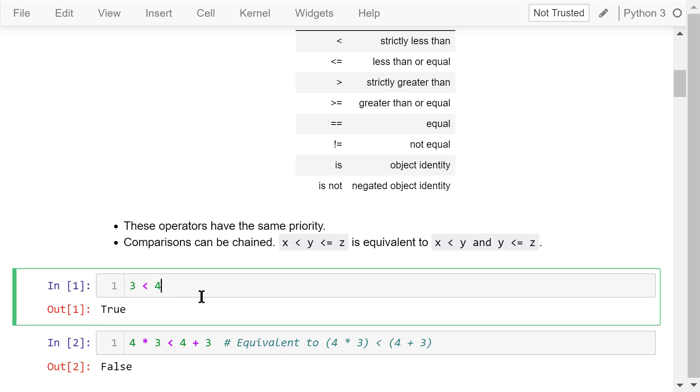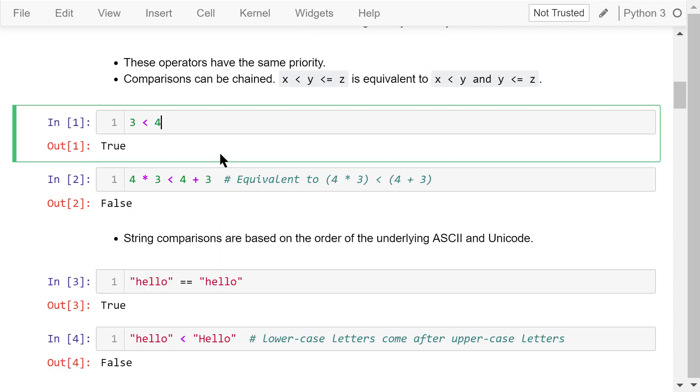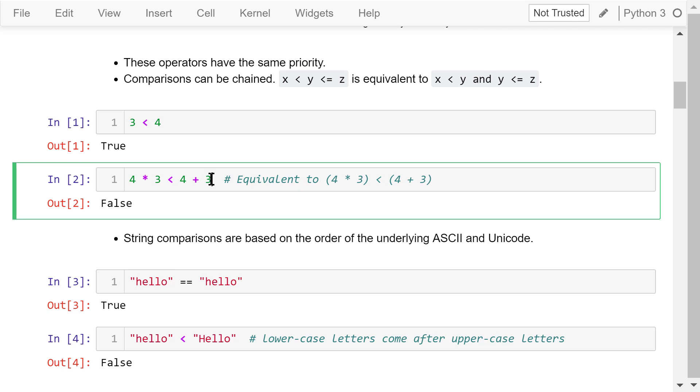This is a very simple example. Is 3 less than 4? The answer is true. Is 4 times 3 less than 4 plus 3? This is equivalent to this comparison with parentheses. That means is 12 less than 7? The answer is false.